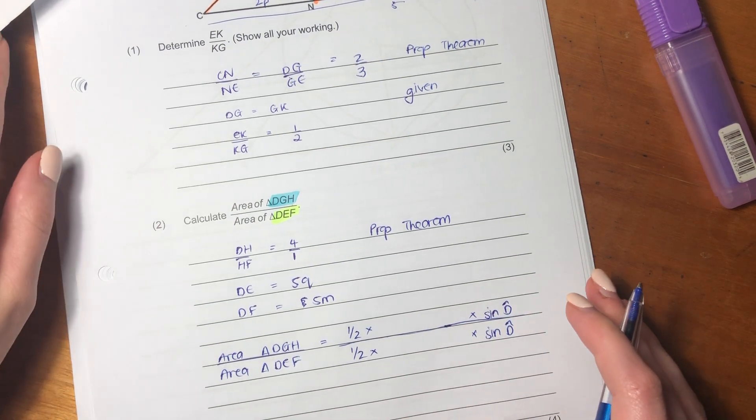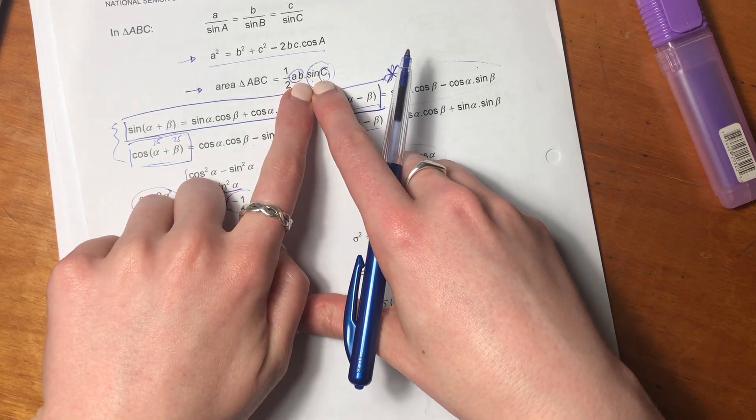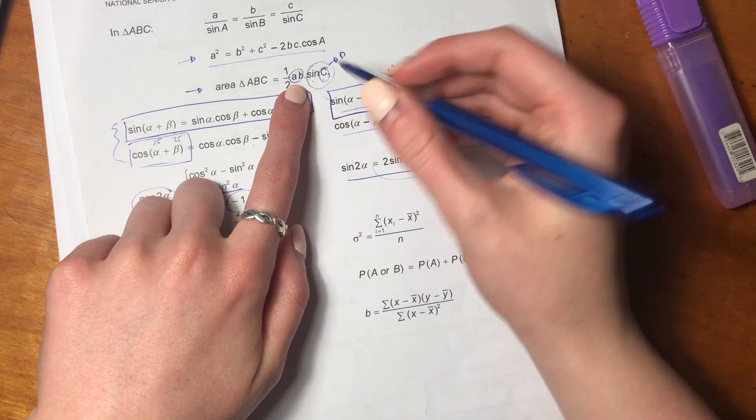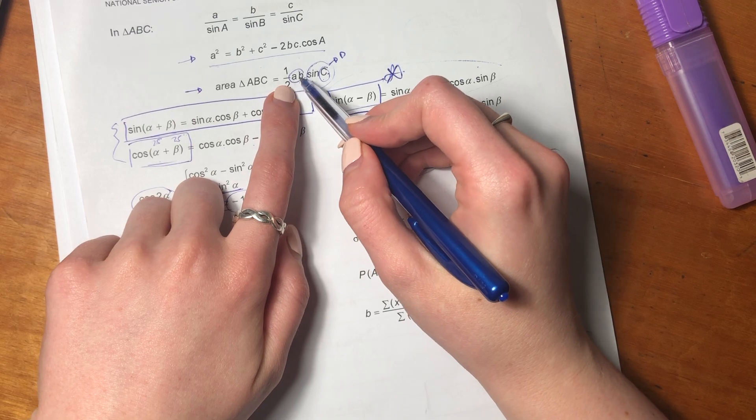Then what we're going to do is if we're looking at this C here, our C here we said is D. So we're going to need to figure out what A and B is, or are. A and B are.